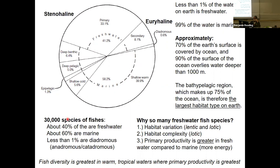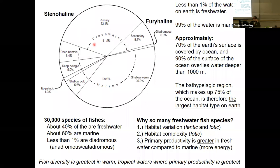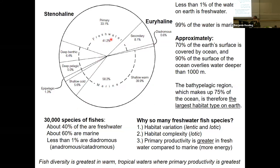Of our approximately 30,000 species of fishes, about 40% — 41.2% to be precise — are freshwater, and 60% are marine. The marine habitat is bigger and there are more marine fishes, but there's a lot more than 1% of fishes that are freshwater. There is tremendous diversity in freshwater habitats despite the fact that they don't make up a whole lot of area.